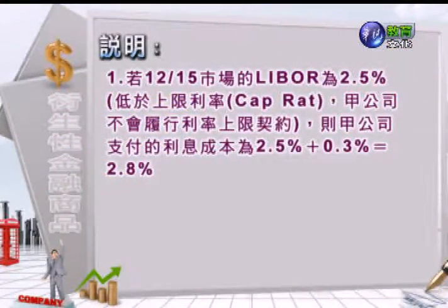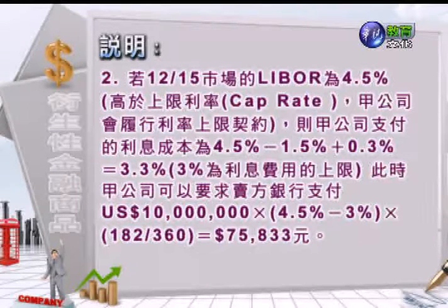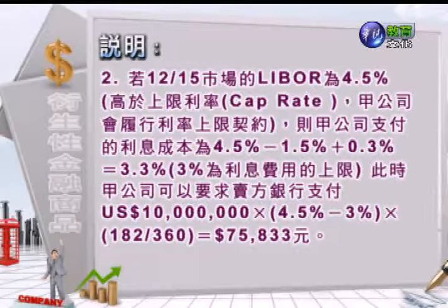我们分别假设比3%高或低的情况，来看甲公司该怎么履行这个利率上限。第一种，假如12月15号LIBOR为基准是2.5%，它低于上限利率3%，这时候其实是价外的，甲公司不会履行利率上限契约，它所支付的利息成本就是按市场的2.5%加上0.3%的利率上限保险费用，整个贷款成本就是2.8%。第二种情况是12月15号市场LIBOR高于4.5%，就是高于上限利率了，这时候甲公司就会履行利率上限契约。